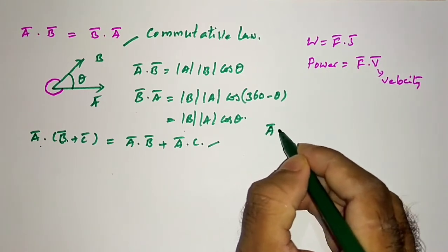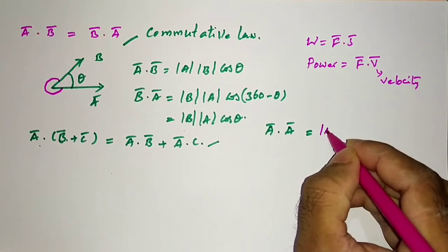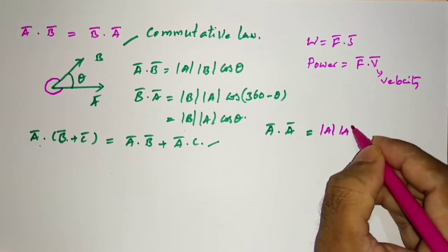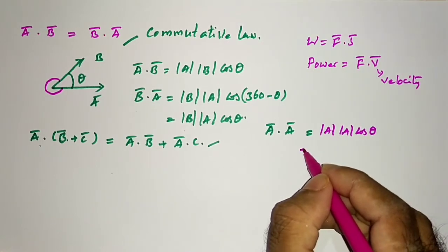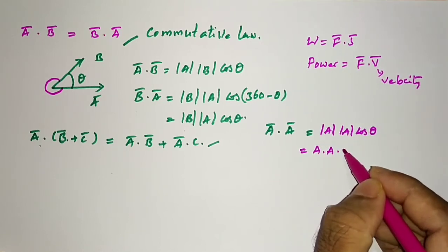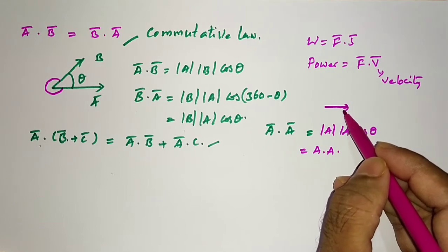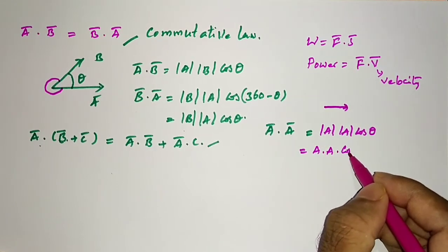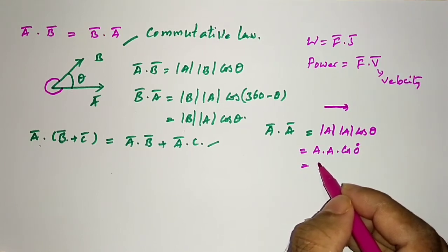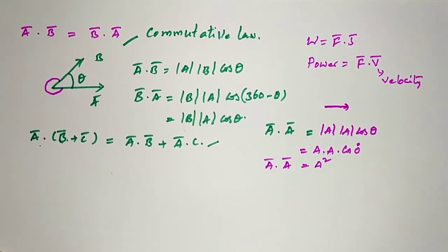Now let us find A·A. Using the formula: A·A = |A| × |A| × cos 0° = a × a × 1 = a². The angle between a vector and itself is zero, and cos 0° = 1. Therefore, A·A = a².